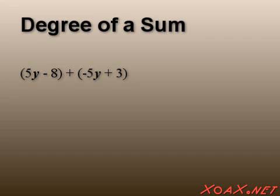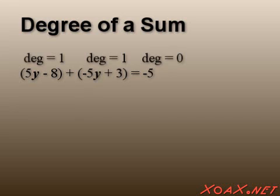Take 5y-8 and -5y+3. Then the sum is -5, which has degree 0, while the polynomials that we added have degree 1.